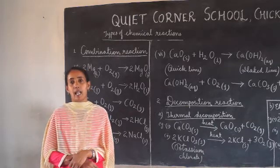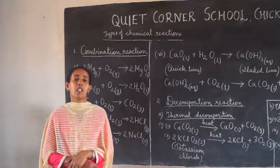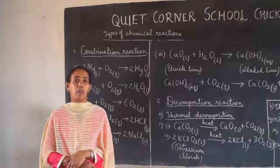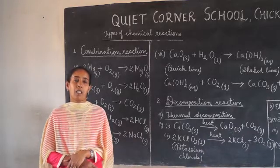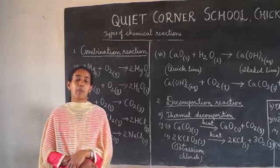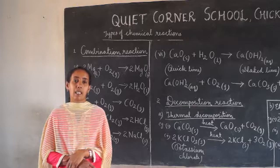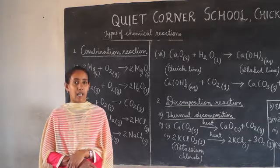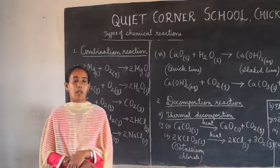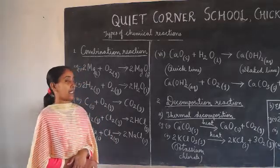What are chemical reactions? Chemical reactions are processes in which new substances with different properties are formed. In a chemical reaction, reactants combine together to form new substances with entirely different properties to that of the reactants. The new substances formed are called products. So, which are the different types of chemical reactions?